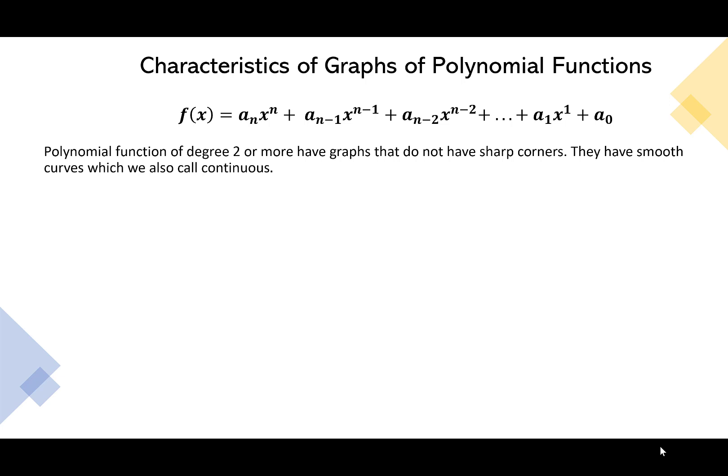We're going to do a lot with polynomials that are already factored. What I want you to think about as we start to graph them is that polynomial functions that are degree 2 or more are going to have graphs that don't have sharp corners — they're going to be smooth curves, which we also call continuous. You could draw them without picking up your pencil, just moving along, going up and down.